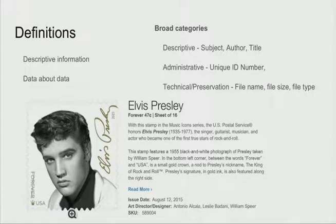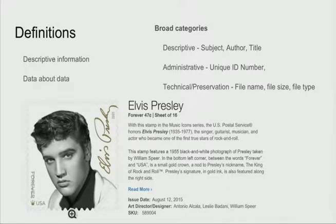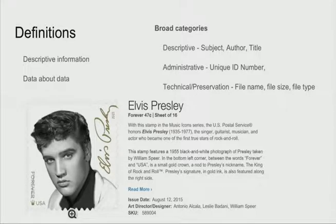Categories include knowing the subject of something, an author, a title, having a unique identifying number associated with your digital object so it doesn't get lost — and thinking about file size and type and ways you might store your digital metadata. For the stamp shown here, we have all this descriptive metadata: the authors, the date issued. All of that can come into play if we're building a digital Elvis exhibit.